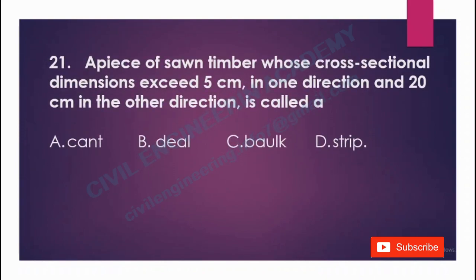A piece of timber with cross-sectional dimensions of 5 cm in one direction and 20 cm in another direction is called: A) a cant, B) deal, C) bulk, D) strip. The answer is bulk.